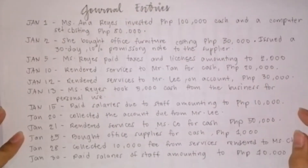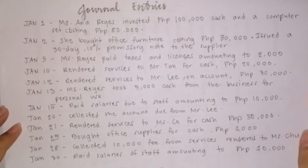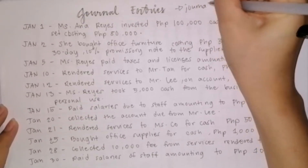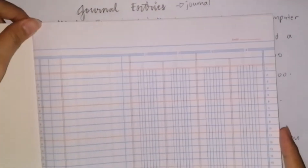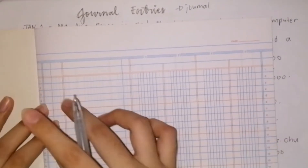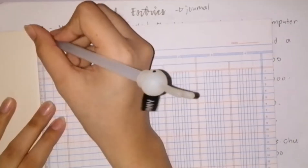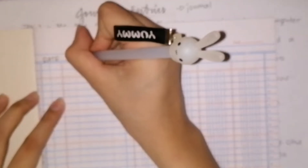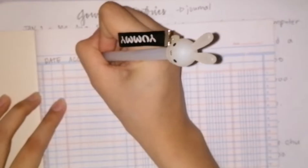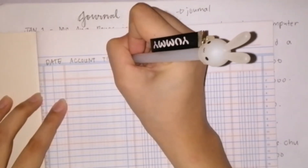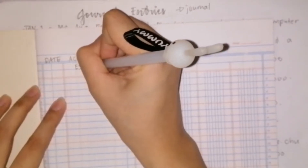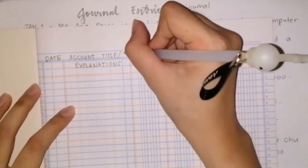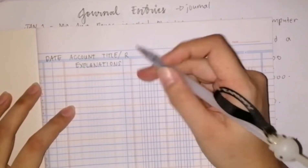This video is about journal entries. Journal entries are made to initially and chronologically record transactions. These are recorded in the book we call the journal — it is called the book of original entries. In the journal, the first column is for the date, when the transaction happened. The second column is for the account titles, what accounts are affected in a particular transaction, and also the explanation or narration. The next one is the reference code, usually given when there's a chart of accounts.